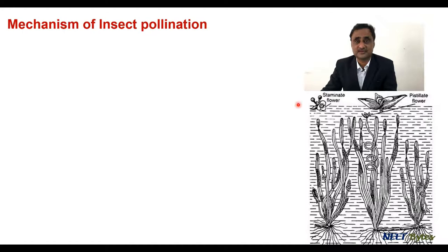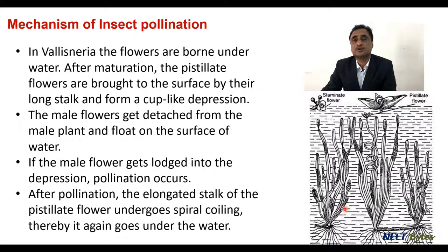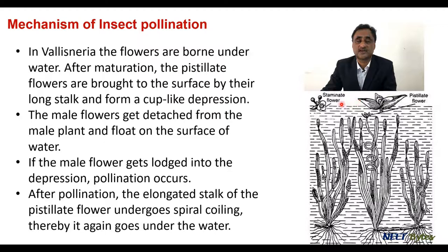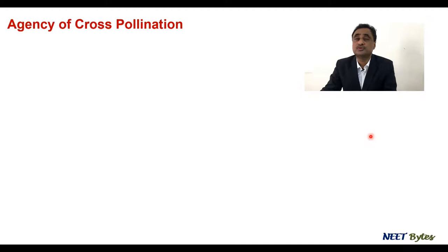Vallisneria is a submerged hydrophyte. For pollination, the female flower comes to the surface. The male flower gets detached and also travels to the surface. The female flower forms a cup-like structure, and the male flower travels toward it. After pollination occurs, the female flower forms a coiled structure and goes back down under the surface. Importantly, pollination in Vallisneria occurs over the surface of the water, not inside it, even though the plant is fully submerged — that is the unique feature of Vallisneria.